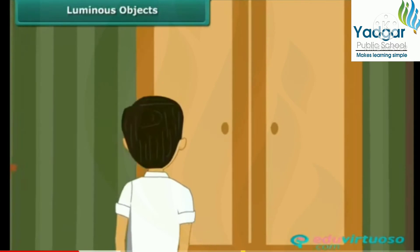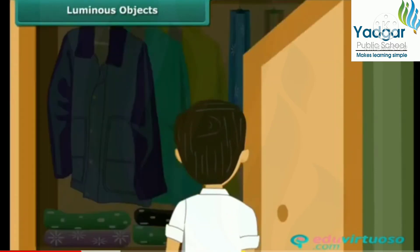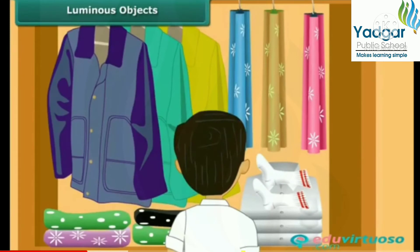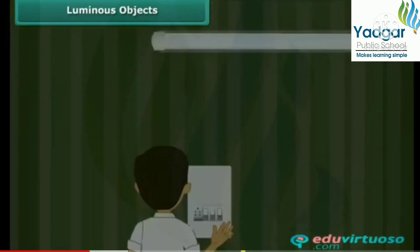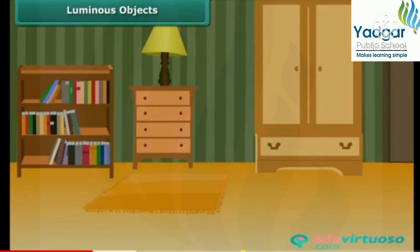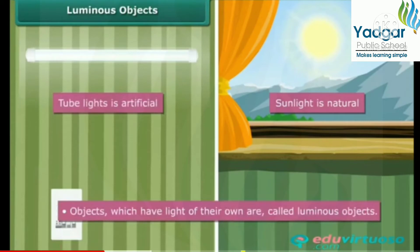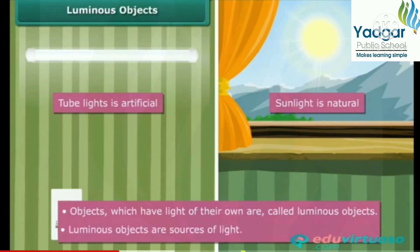You are getting late for school and are not able to find your socks. You search for them in the cupboard. Since the cupboard is dark, you switch the tube lights on. Once you locate the socks, you switch the lights off because there is sufficient daylight. We just talked about two types of light: the light from the tube lights, and daylight, which is the light from the sun. While sunlight is natural, light from the tube lights is artificial. Objects which have light of their own are called luminous objects. Thus, both the sun and tube lights are luminous objects. The sun is a natural luminous object and tube lights are artificial, man-made luminous objects. Luminous objects are sources of light.